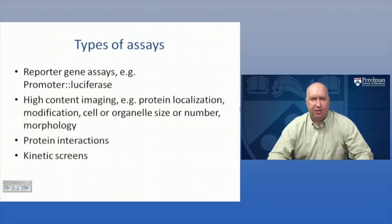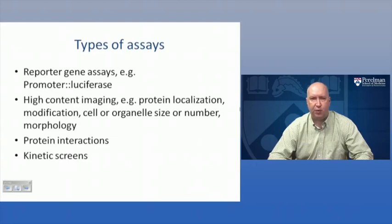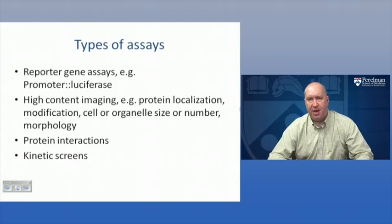Turning to assays, there are many different types. These can be simple reporter gene assays where you have a promoter fused to a reporter gene such as firefly luciferase. There can be imaging assays looking at protein localization within a cell, modification of a particular protein - for example an antibody recognizing the phosphorylated but not unphosphorylated form. You can use more than one label and look at cell or organelle size or number, changing morphology of cells, or protein interactions using FRET or BRET-like techniques. Many of these techniques also allow you to look at the dynamics of a signaling event in kinetic screens.